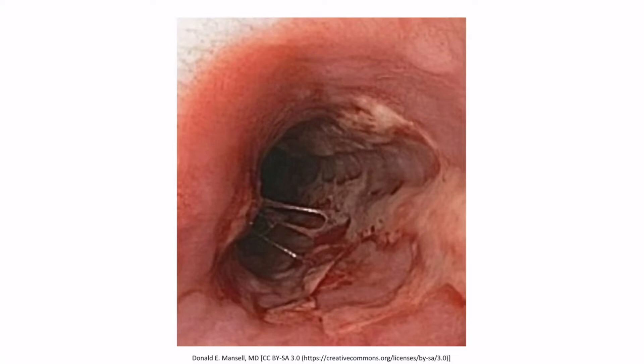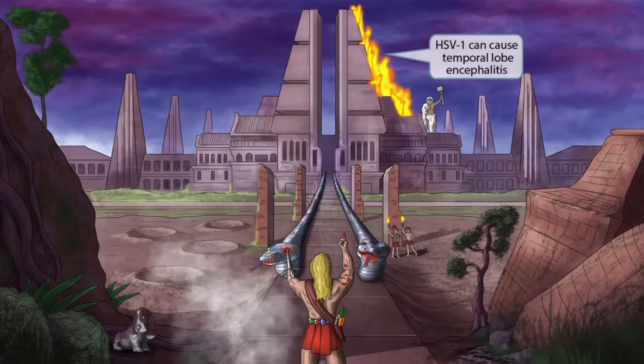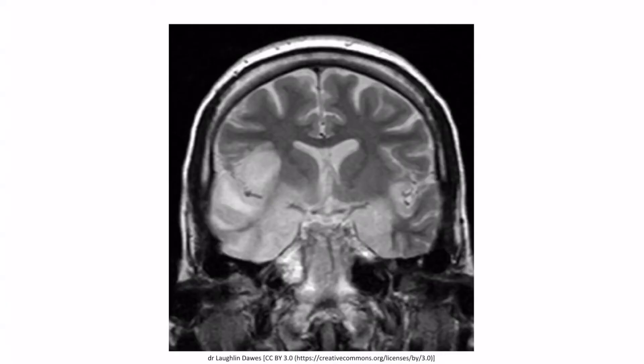This is an endoscopic image of HSV causing ulcerated esophagitis — the ulcers are somewhat superficial and occur all over the esophagus. During one of these temper tantrum episodes, Zeus accidentally made a lightning bolt strike the temple, causing it to catch fire. The temple on fire should make you think of inflammation of the temporal lobes of the brain, so HSV1 can cause temporal lobe encephalitis. This is an MRI of temporal lobe encephalitis — there is pretty obvious enhancement of the temporal lobes.